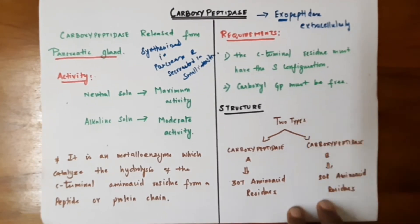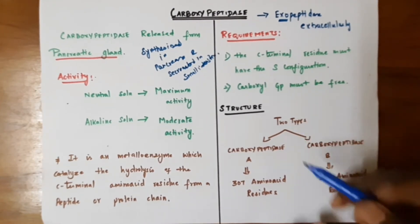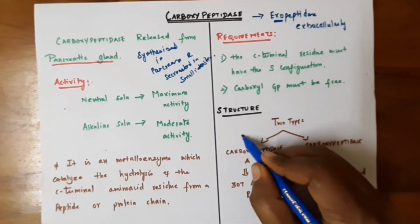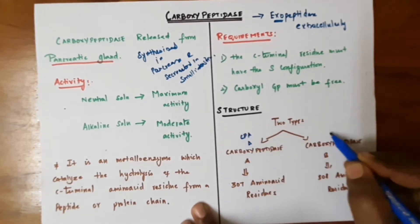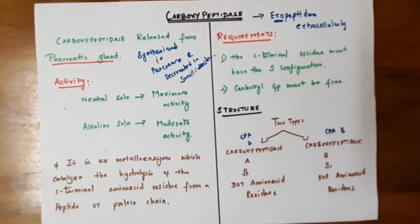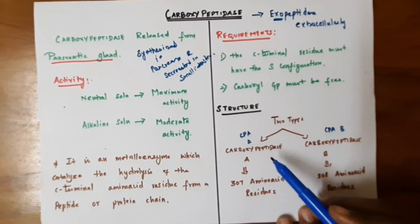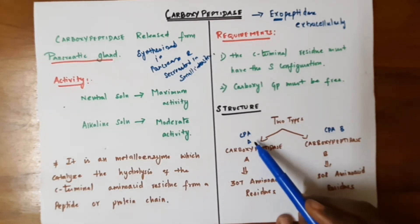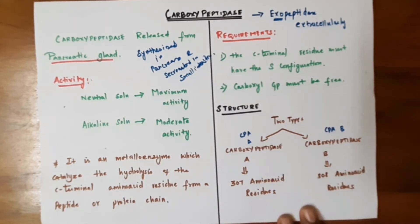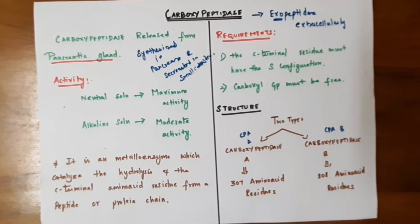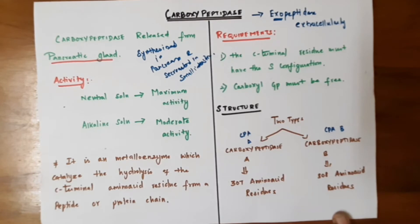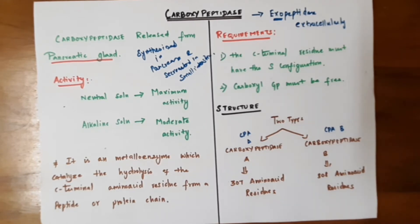Carboxypeptidase has two types: carboxypeptidase A and carboxypeptidase B, simply called CPA and CPB. In the human system, carboxypeptidase A is the primary form responsible for biological activity. Carboxypeptidase A contains 307 amino acid residues in its structure, while carboxypeptidase B has one extra amino acid — 308 amino acid residues.